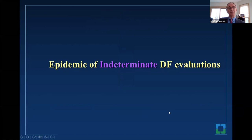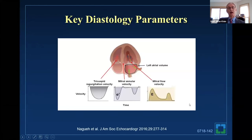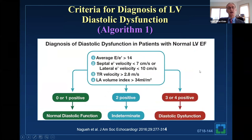In the U.S., some people who don't use the guidelines well say there's an epidemic of indeterminate diastolic function. In this webinar, I'd like to show how we can lessen indeterminate diastolic function assessment. The key diastolic parameters we measure are simple ones: left atrial volume index, mitral E and A wave, tissue Doppler E prime, and TR velocity—all of which reflect elevated filling pressure. In the guidelines there's algorithm one, with four parameters: E/V prime more than 14, a low tissue Doppler, a high TR velocity, and a large left atrial volume index. If most are positive, you have diastolic dysfunction; if most are negative, normal diastolic function; in between, it's called indeterminate.